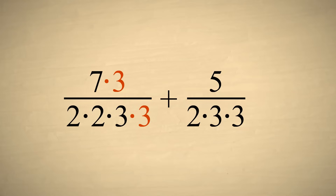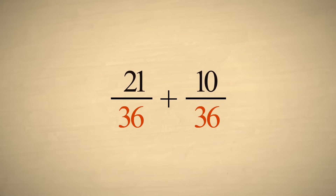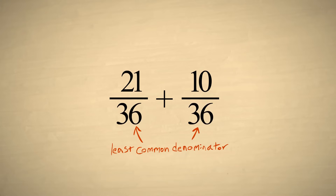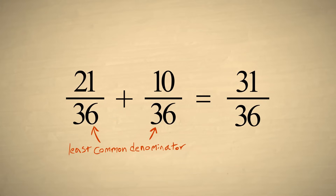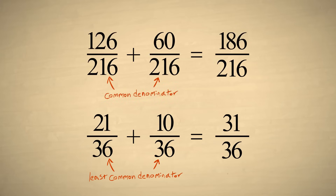And the second denominator only needs an additional factor of two. So we end up with a much smaller common denominator of thirty-six, and a sum of thirty-one thirty-sixths, which is a lot simpler than the result we obtained by multiplying the two denominators.